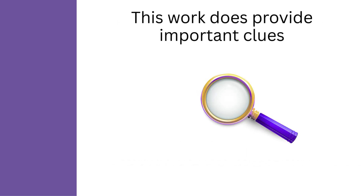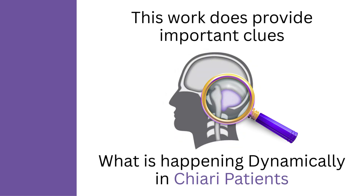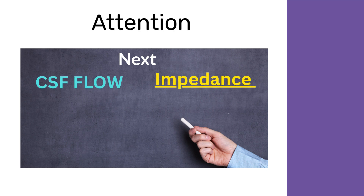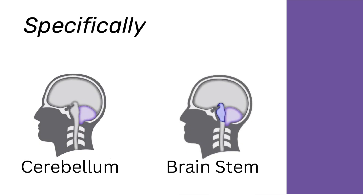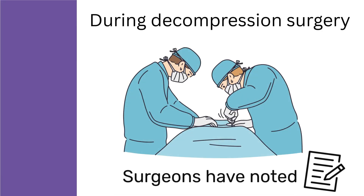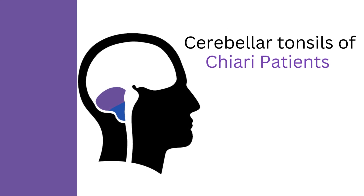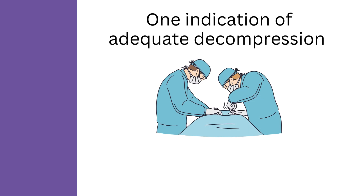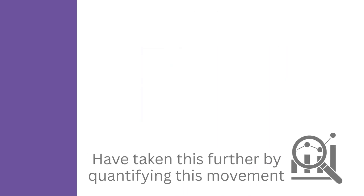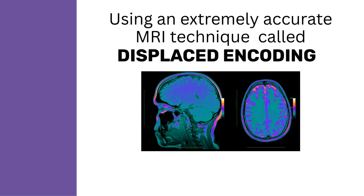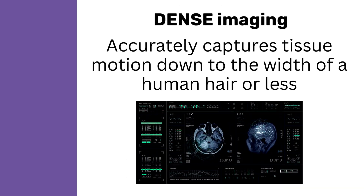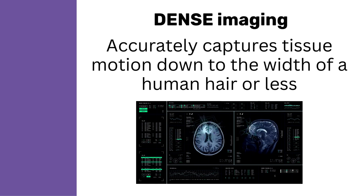However, this work does provide important clues as to what is happening dynamically in Chiari patients. Next, we will turn our attention from CSF flow and impedance to the motion of brain tissue, specifically the cerebellum and brain stem. During decompression surgery, surgeons have noted that the cerebellar tonsils of Chiari patients visibly pulsate with a heartbeat. In fact, one indication of adequate decompression is that this pulsation is reduced. Conquer Chiari researchers have taken this further by quantifying this movement using an extremely accurate MRI technique called displaced encoding with stimulated echoes, or DENSE. DENSE imaging has been shown to accurately capture tissue motion down to the width of a human hair or less.